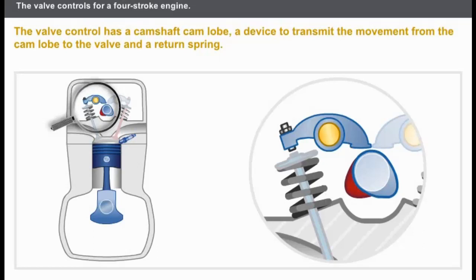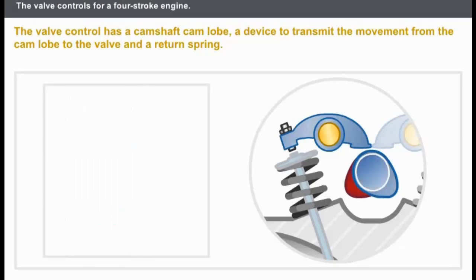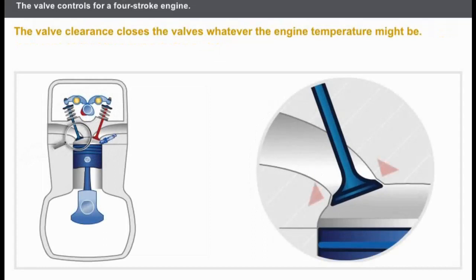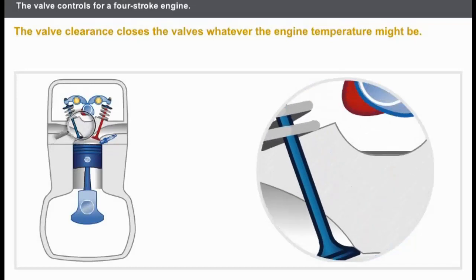A return spring is used to close the valve properly. Some valve controls do not require adjustment as they have a self-adjusting hydraulic device. This lesson only covers valve gears that require checking and adjustment. You can move the mouse cursor over the components to identify them.